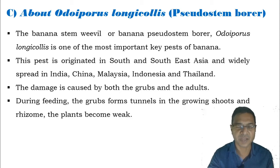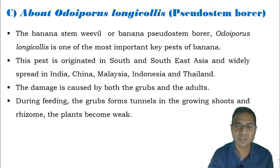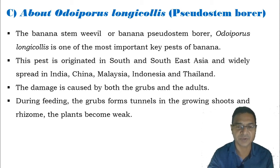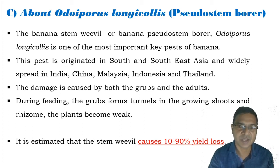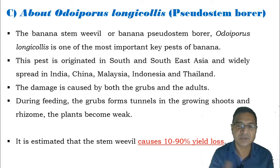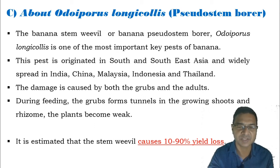During feeding, the grubs form fine tunnels in the growing shoots and rhizomes, causing the plant to become weak. It is estimated that grubs as well as adults cause severe damage to the plant and ultimately decline productivity. Around 10 to 90% yield loss is caused by this stem weevil.